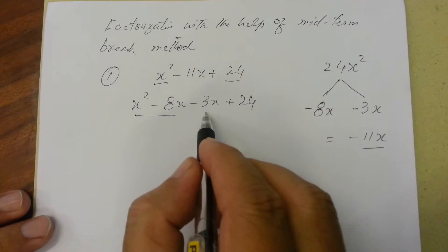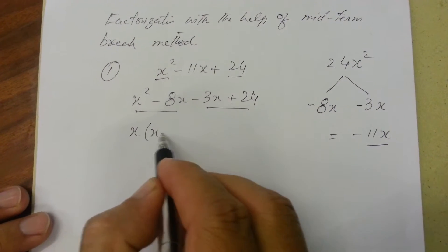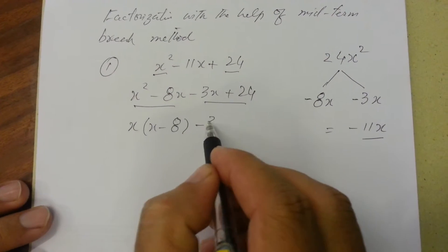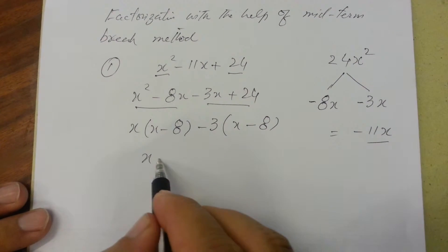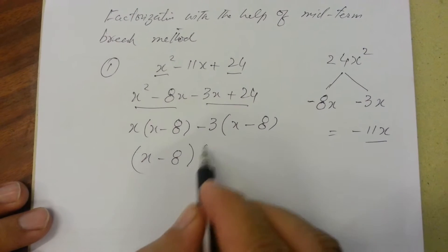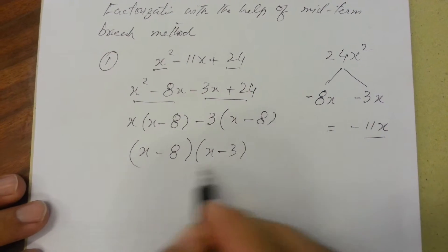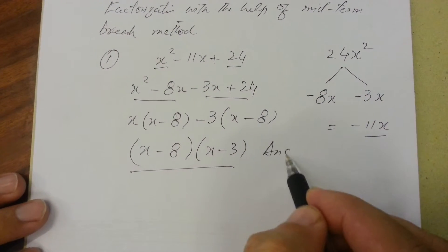taking common x into x minus 8, taking minus 3 it will be x minus 8. So x minus 8 is again common into x minus 3. This is the answer.